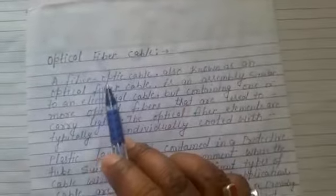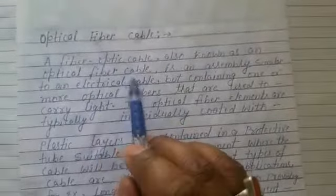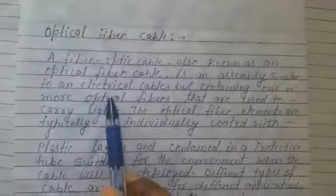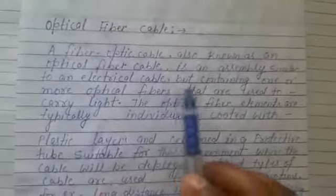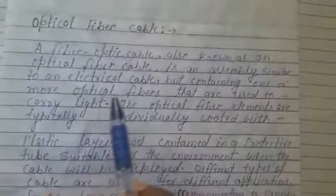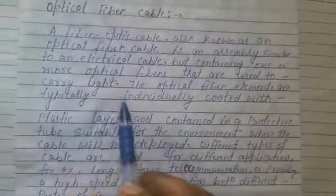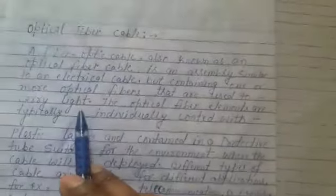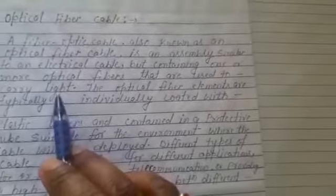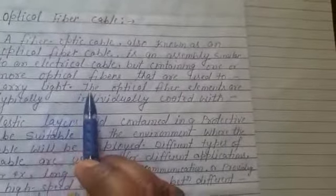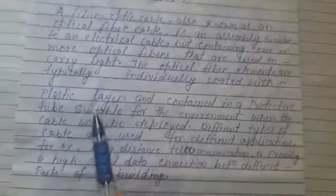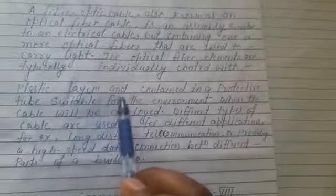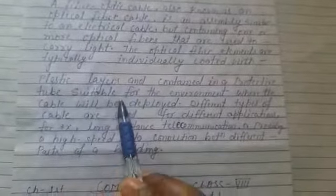Now we have to know about optical fiber cable. A fiber optical cable, also known as an optical fiber cable, is an assembly similar to an electrical cable but containing one or more optical fibers used to carry light — that is, data or information — which travels in the form of light. The optical fiber elements are typically individually coated with a plastic layer for protection.